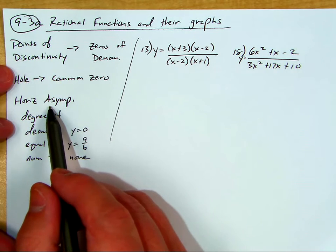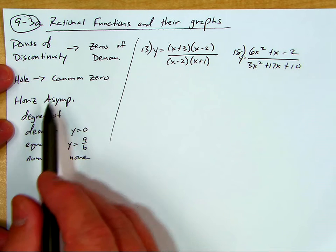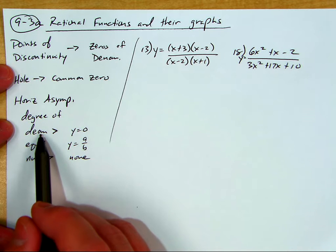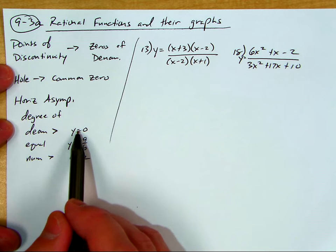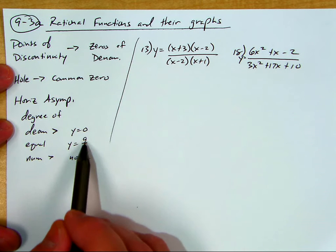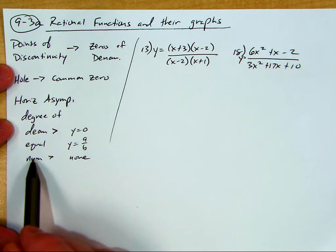And also we have to figure out if there's a horizontal asymptote. We analyze the degree of each polynomial. If the denominator is greater, then y equals zero. The x-axis will be an asymptote. If the degrees are equal, we look at the leading coefficients to find the asymptote. But if the degree of the numerator is greater, there's none.